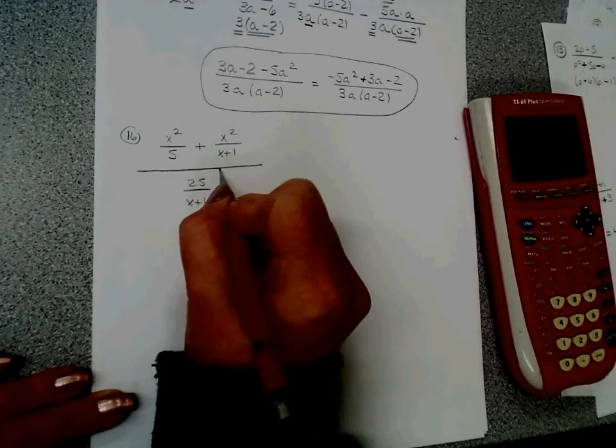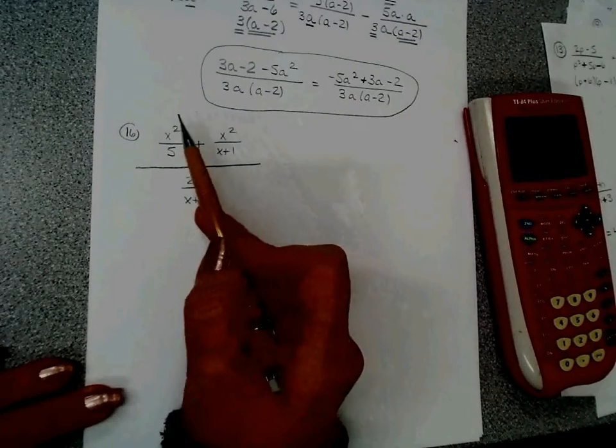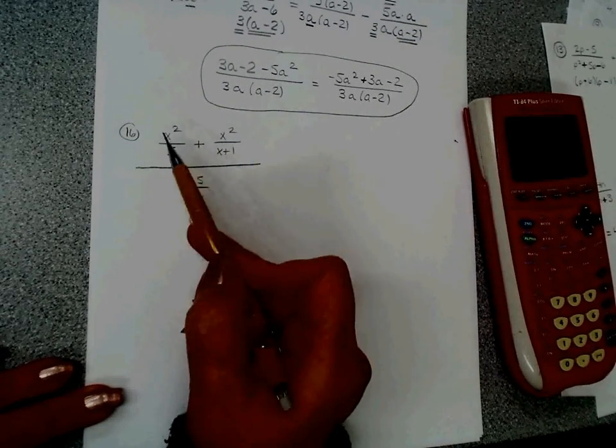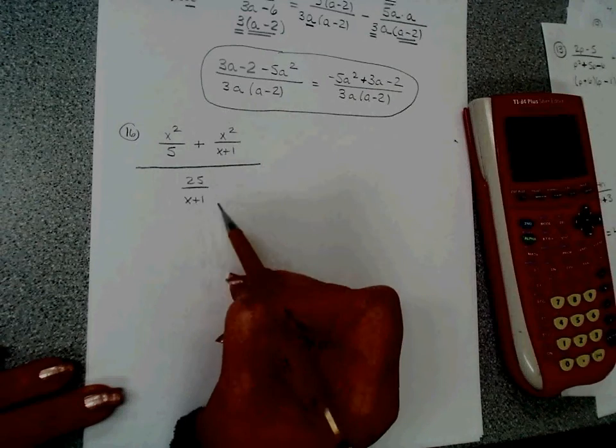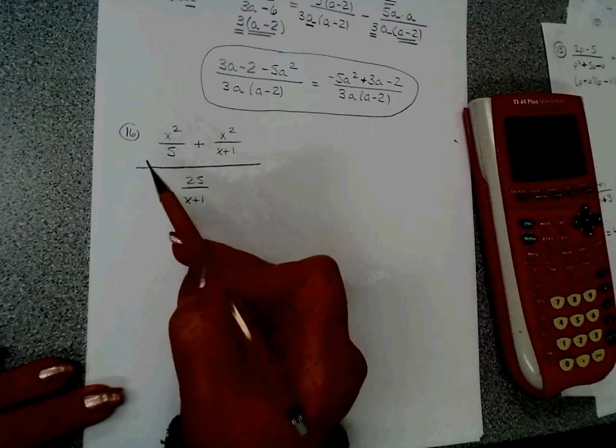We're going to treat this in steps. We are going to add the numerators. We don't have anything to add on the denominators. I made it easy. I just gave you one piece, and we're going to same, change, flip.